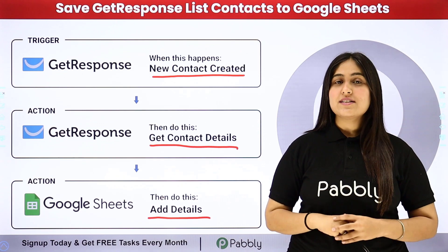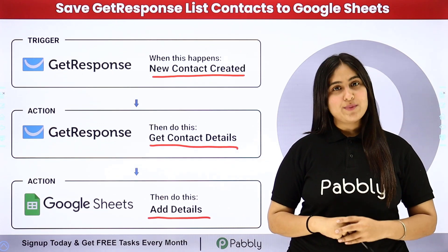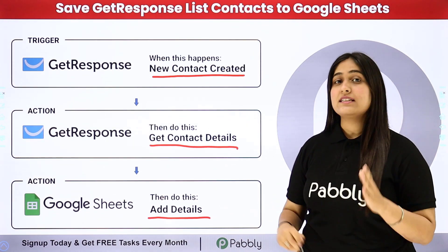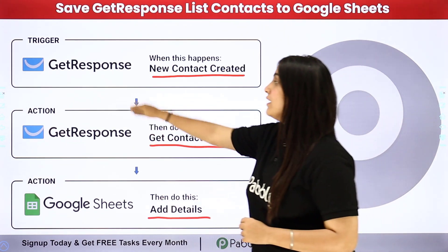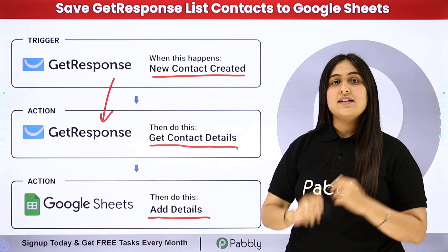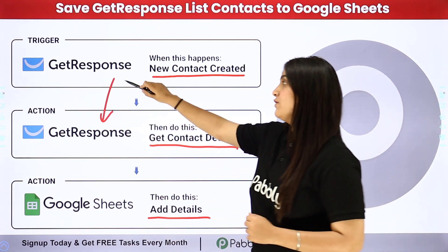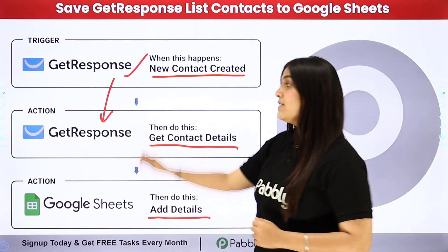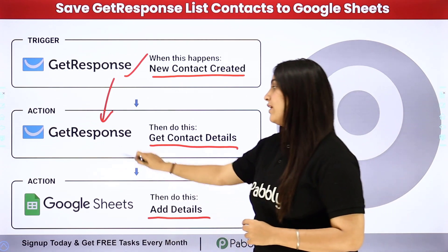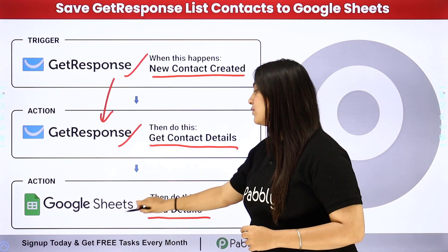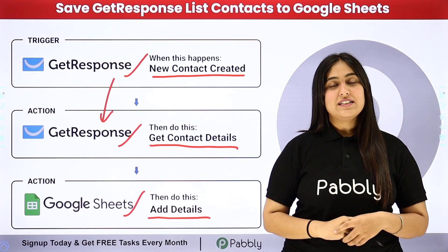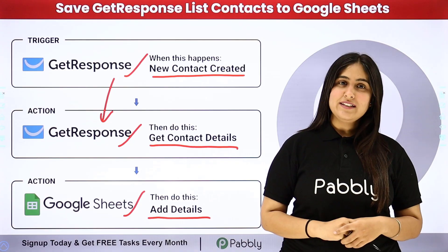To automate this process, we will use an automation software named Pabbly Connect, in which we need to connect our trigger and our action. Our trigger application will be GetResponse and our action applications will be GetResponse and Google Sheets. To learn this process step by step, let me take you to my screen.